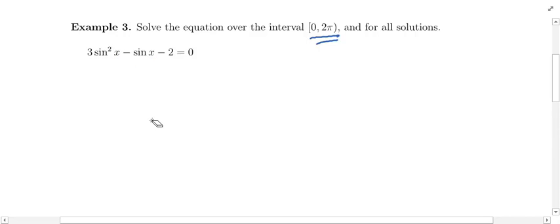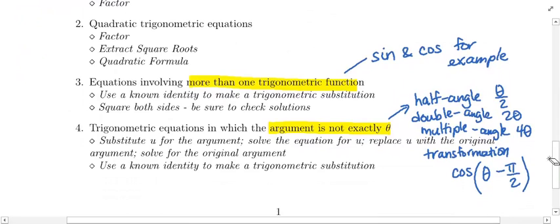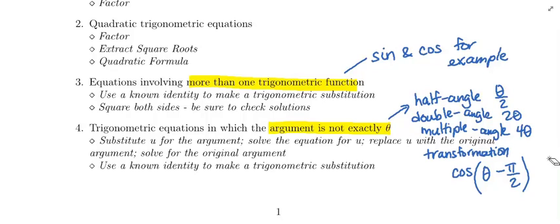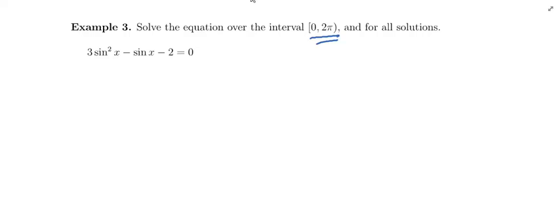To solve a quadratic trigonometric equation, we can either factor, extract square roots, or use the quadratic formula — the same methods used to solve ax² + bx + c = 0. I'm going to work this one by factoring. You could use the quadratic formula on it; factoring doesn't always work, but the quadratic formula always works, so that's one benefit of it. This particular equation is not a good candidate for extracting square roots — we'll go through that in a later example.